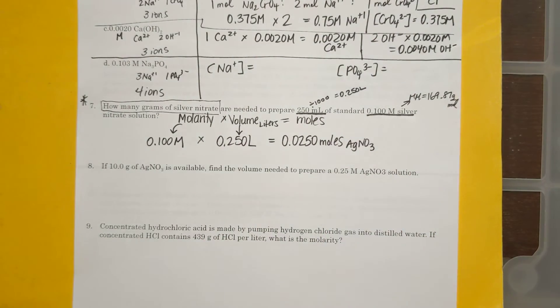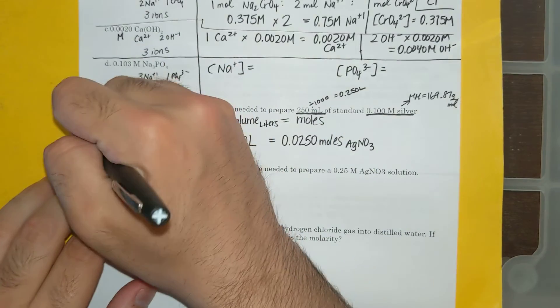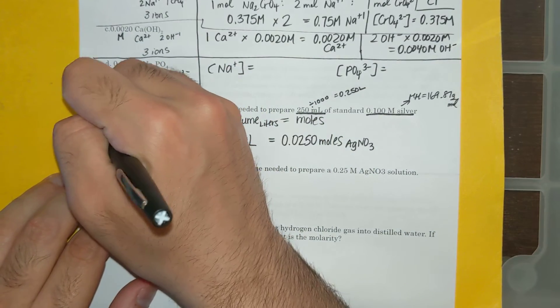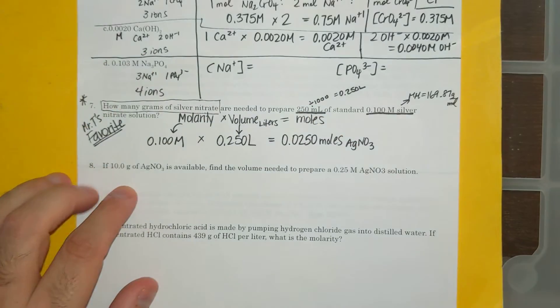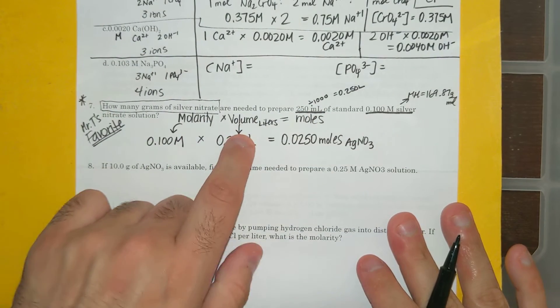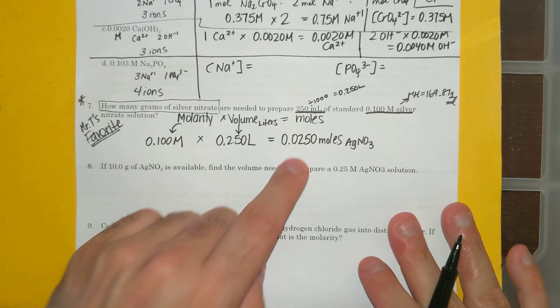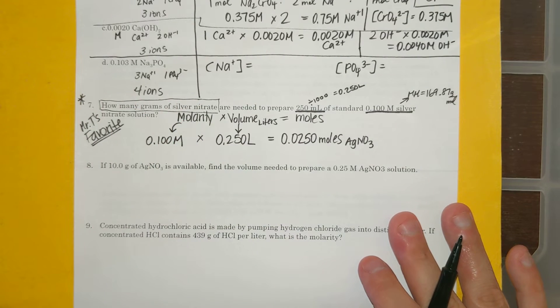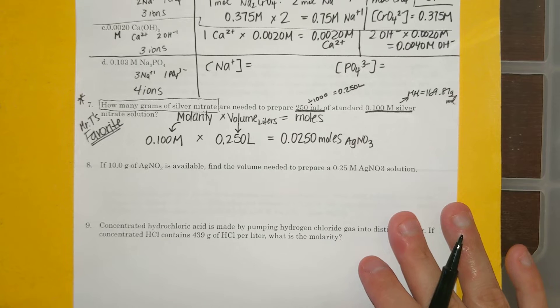So my favorite equation, Mr. T's favorite equation: molarity times volume in liters equals moles. This helps you solve so many things with stoichiometry. If you know how to do this, boom, any stoichiometry problem becomes easy.